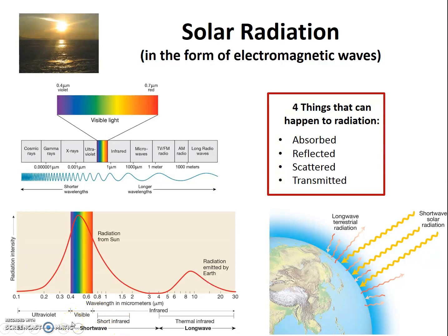Notably, visible light makes up the highest percentage of this shortwave radiation. We have also learned that there are four things that can happen to radiation: it can be absorbed, reflected, scattered, or transmitted. The atmosphere transmits shortwave radiation, and Earth absorbs it and re-emits longwave radiation — thermal infrared. It is this emission of infrared radiation that heats up the troposphere.